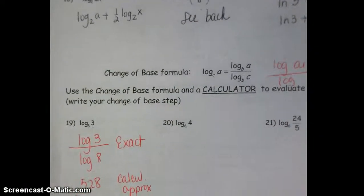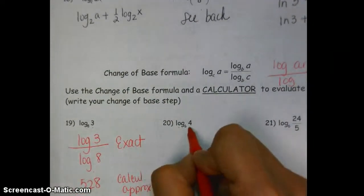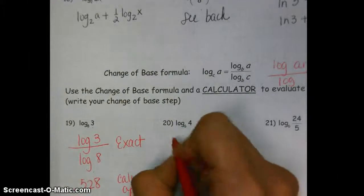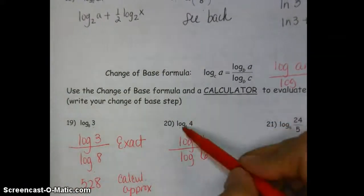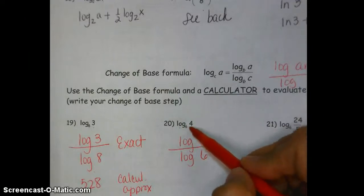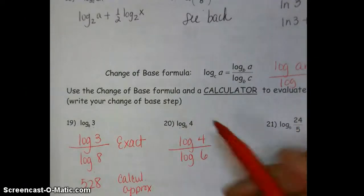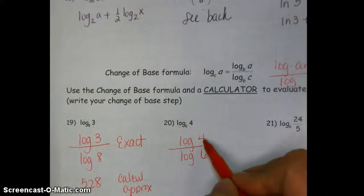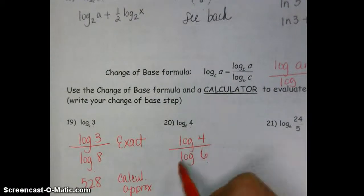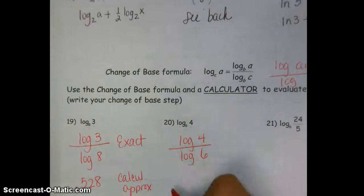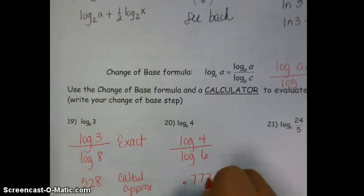All right, so then this one, if I need to evaluate without a calculator, it would be log 4 over log 6. So change of base formula is log of your argument divided by log of the base. If I ask you to evaluate using a calculator, then you would do log 4 enter divided by log 6 enter and get a decimal approximation of 0.773.